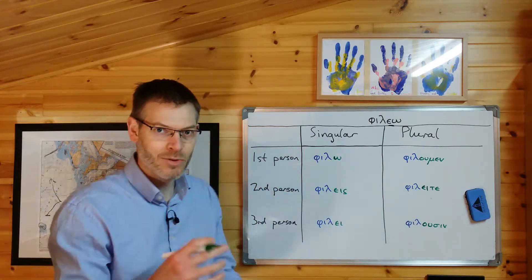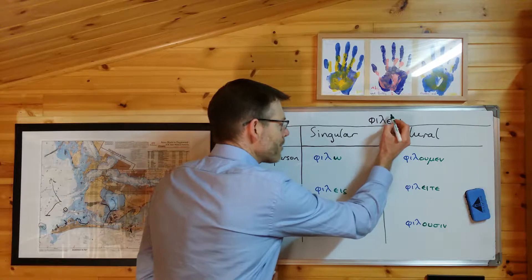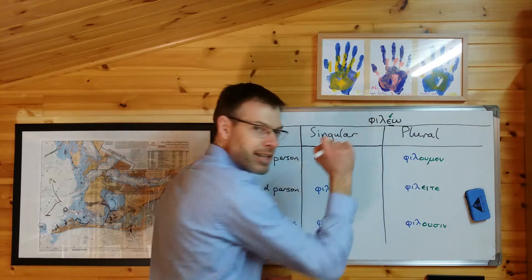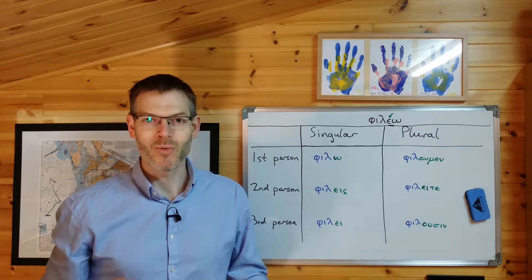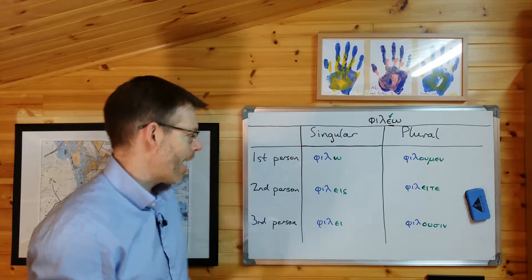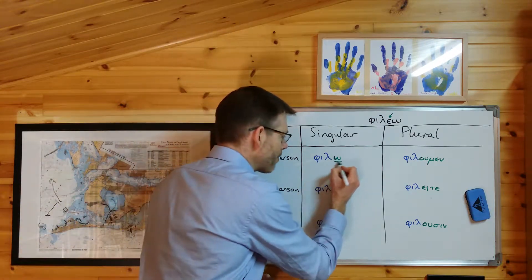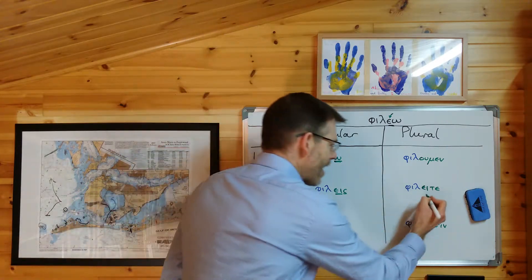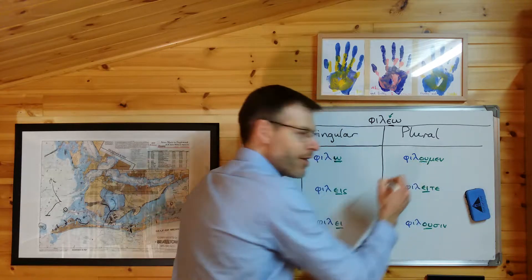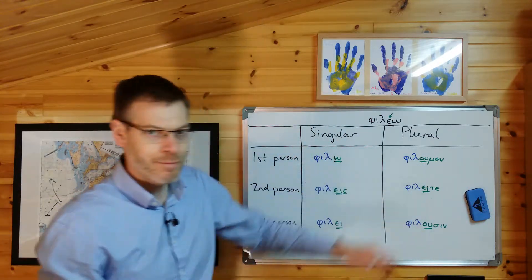But here's the rationale for this, which will help you to remember it. This epsilon, which is strictly speaking a part of the stem, is weak. And like anybody weak, it wants to be big. It's only happy if it can join in with something big that's already there, like these, or if it can become a part of something new that's big, like a diphthong.